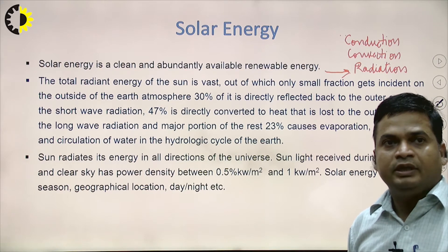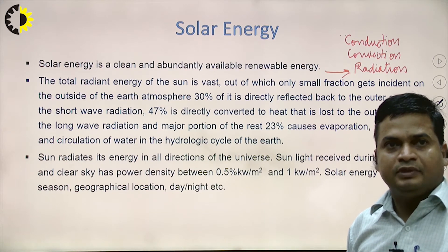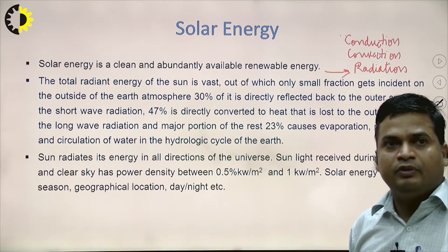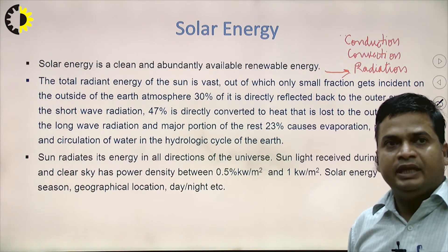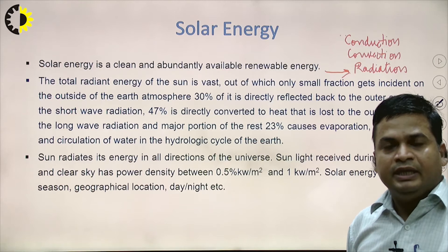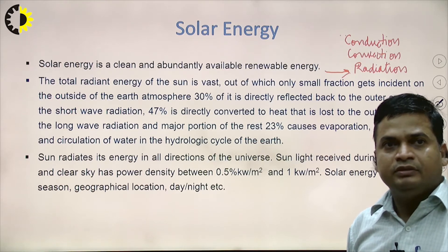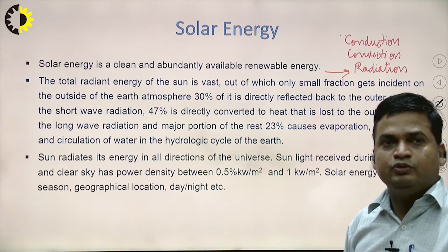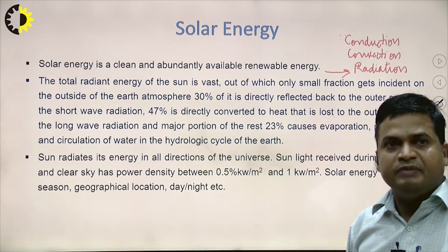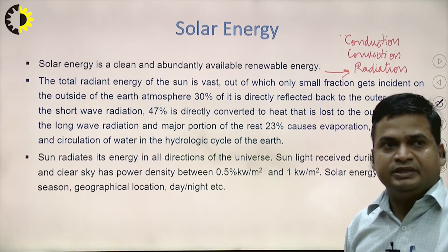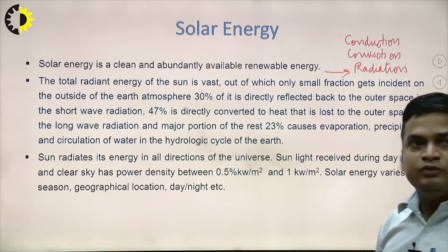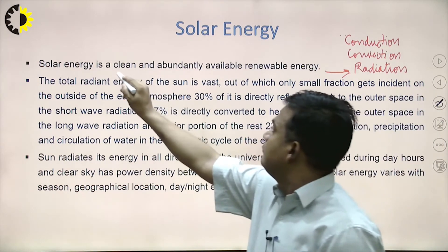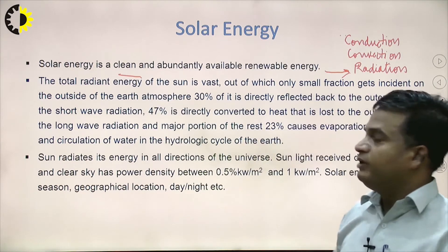In a solar pond, radiation passing through the water gets absorbed at the bottom surface of the pond. There is a brine solution that heats up and stores the energy in the form of heat. That heat can be used to convert water into steam, and that steam is used in a steam turbine for producing electricity. Solar energy uses radiation — it is a clean type of energy with no pollution.